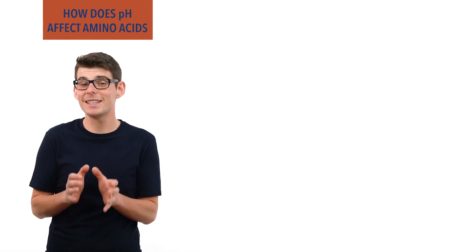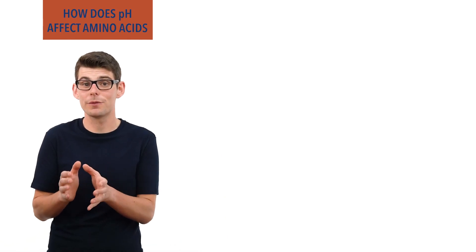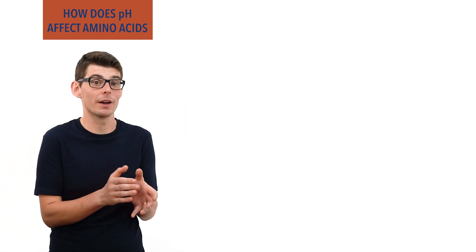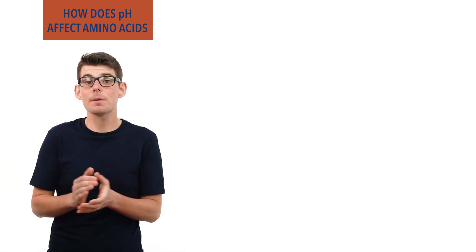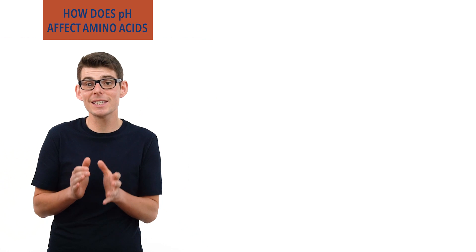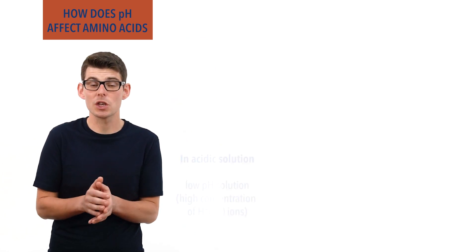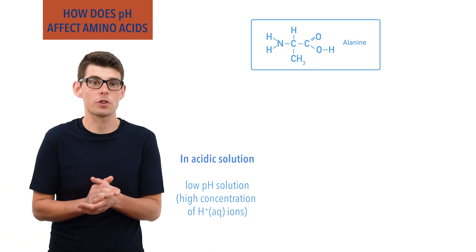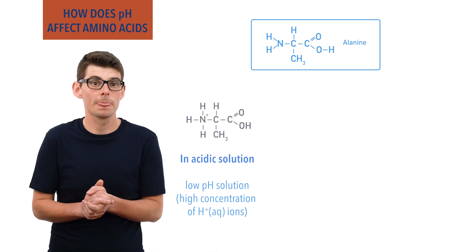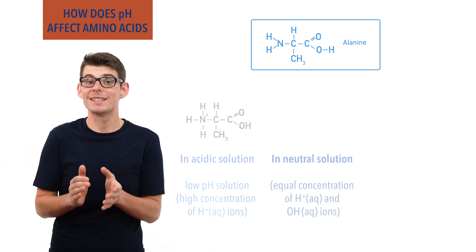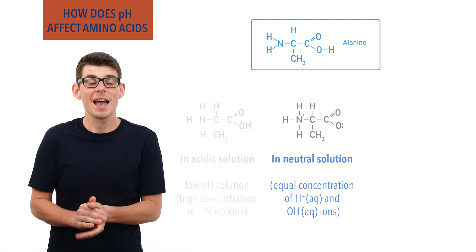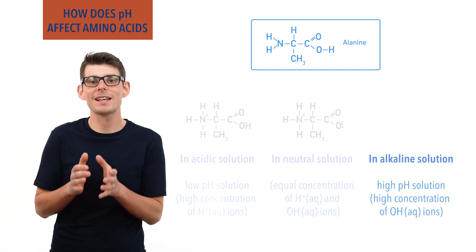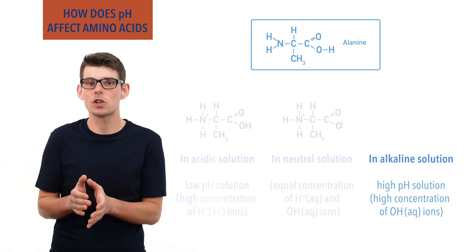Amino acids can exist in three forms, all depending on the pH of the solution they are in. For example, in an acidic solution with a low pH, the amino acid alanine exists as a positively charged ion. In a neutral solution, it exists as a zwitterion, and in an alkaline solution with a high pH, it exists as a negatively charged ion.